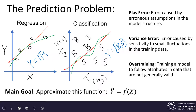Bias errors are caused by erroneous assumptions in the model structure. The red curves are drawn with the assumption that the relationship is linear — on the left side, it's a linear function between inputs and outputs; on the right side, we can separate the bassets from the shepherds with a linear separation line. We say this type of model drawn in red has high bias, meaning even before we started training, the model is biased toward assuming a linear relationship. A high-bias model will tend to be in danger of having high bias errors. However, if the relationship really is linear, then we won't have those bias errors — we would want to use a linear model if the relationship really is linear.